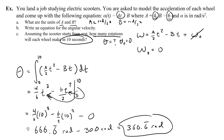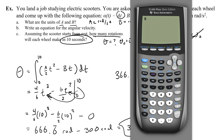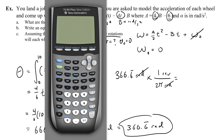We're almost done. That's the change in radians over 10 seconds. To convert to revolutions, use a factor-label conversion: 366.6 repeating radians times 1 revolution over 2 pi radians. Be careful with your calculator — you must put 2 pi in parentheses when dividing, otherwise PEMDAS will give you the wrong answer. This gives approximately 58.4 rotations.